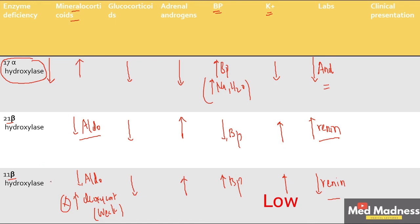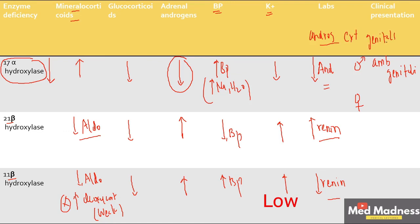Regarding clinical presentation: in 17-alpha-hydroxylase deficiency, decreased androgens cause ambiguous genitalia in males, since androgens are critical for development of external genitalia. Male babies become difficult to distinguish from female babies, requiring chromosomal studies. Undescended testes also occur for the same reason. In females, there is lack of secondary sexual characteristics such as pubic and axillary hair development.